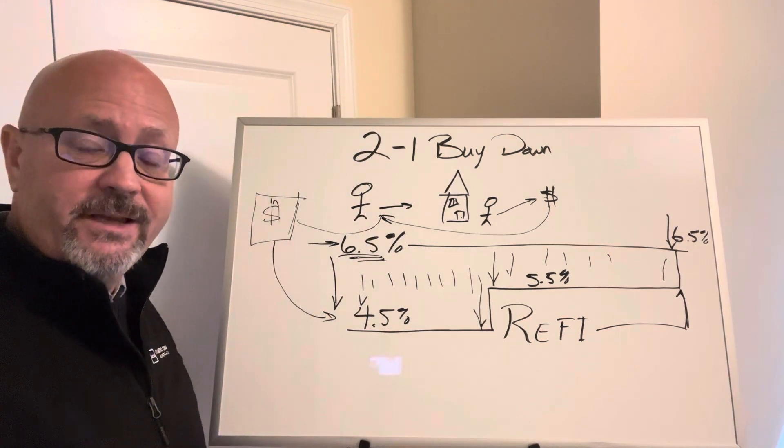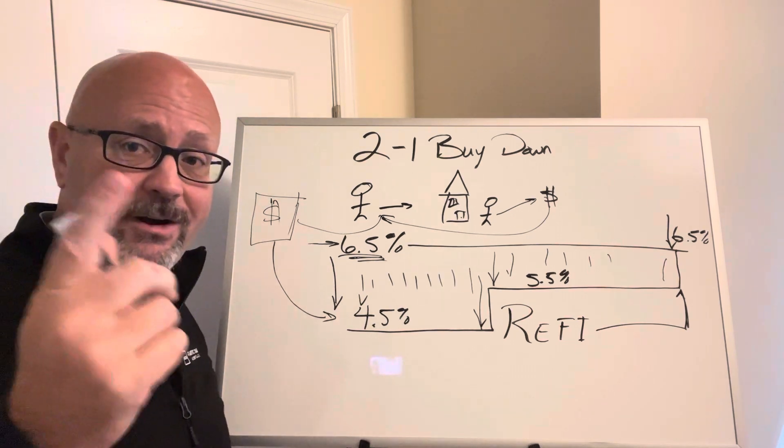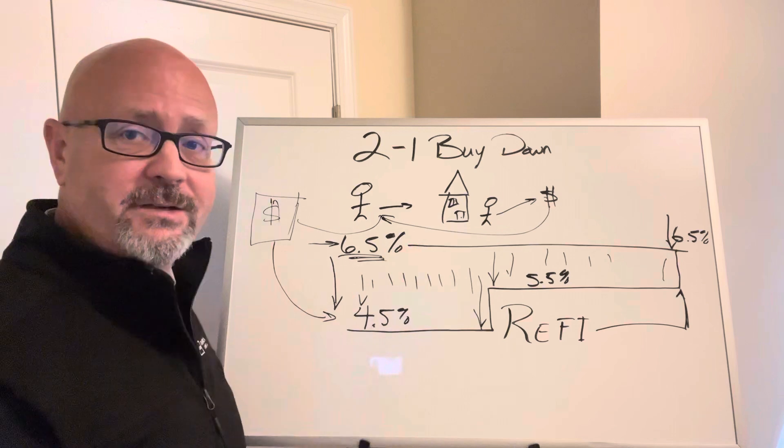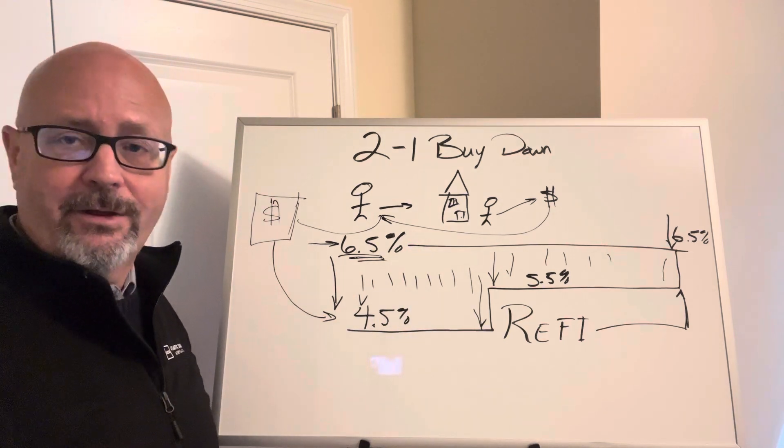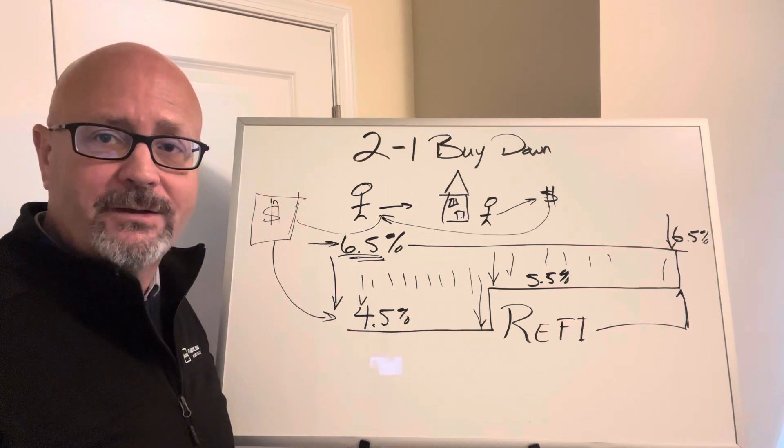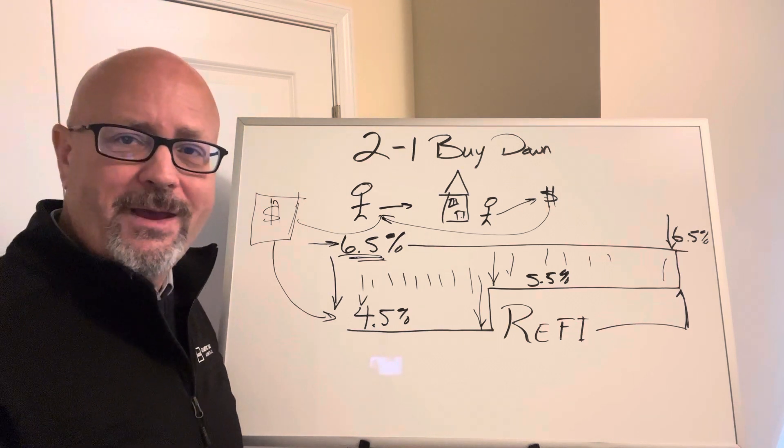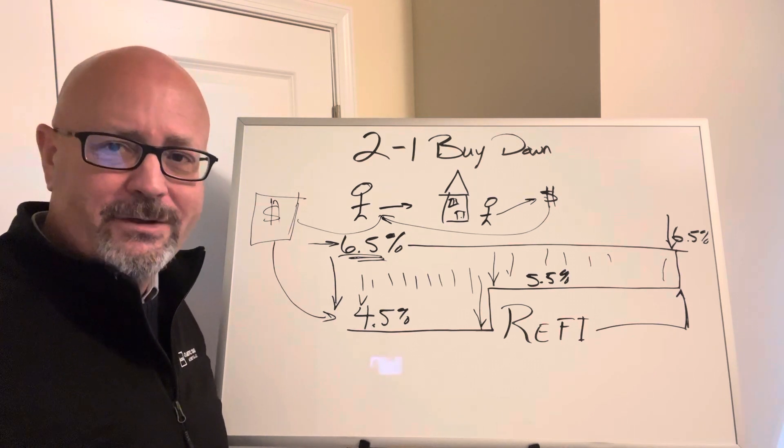Now there is certainly some risk in this, and you need to be very aware of how this functions. But it does function very well as long as you understand what you're getting into. Just keep in mind that the real goal is to help you refinance this property within 24 months. Hope this has helped you make a good decision for you and your family. Chris Parks with Atlantic Coast Mortgage. I look forward to serving you and yours.